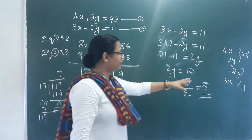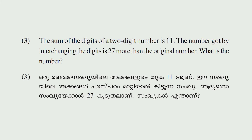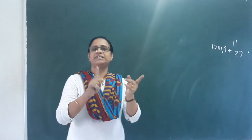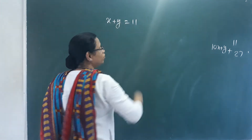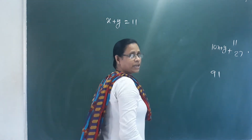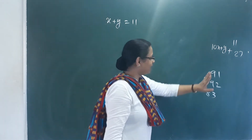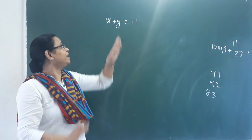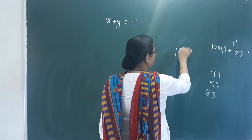So x equals 7 and y equals 5. Next problem: The sum of the digits of a 2-digit number is 11. The number got by interchanging the digits is 27 more than the original number. What is the number? Let one digit be x and the other be y. So x plus y equals 11.